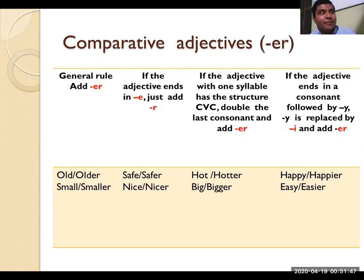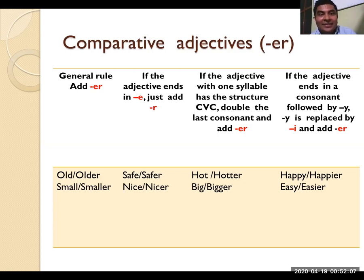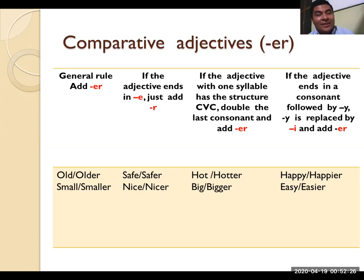Nos vamos a la siguiente. If the adjective ends in a consonant followed by Y, replace the Y with I and add ER to form the comparative. Si mi adjetivo termina en consonante seguido de Y, voy a reemplazar la Y por la I latina y agregar ER. Estas tres reglas las tengo que identificar y dominar, para que si mi adjetivo no cumple con ninguna de ellas, me paso a la regla general — que solamente agrego ER.